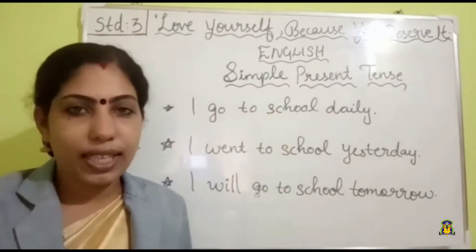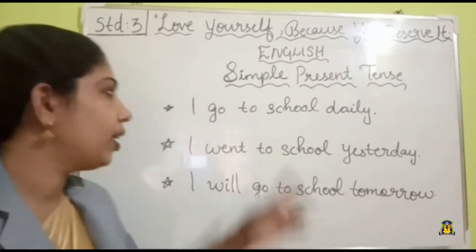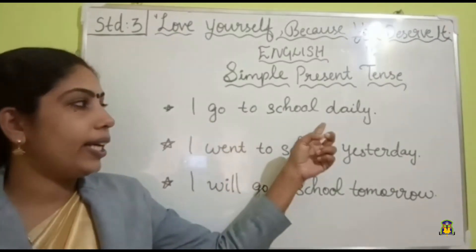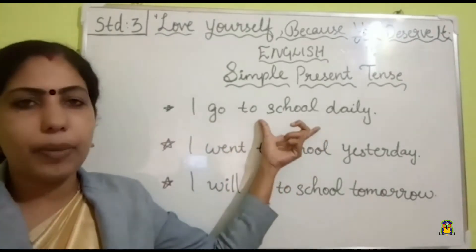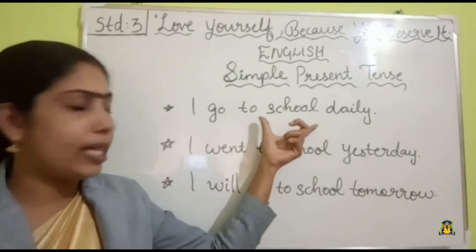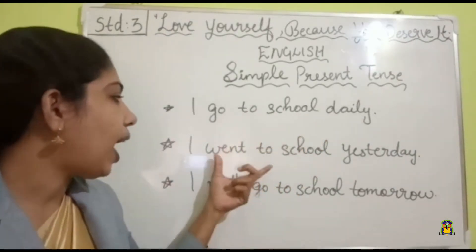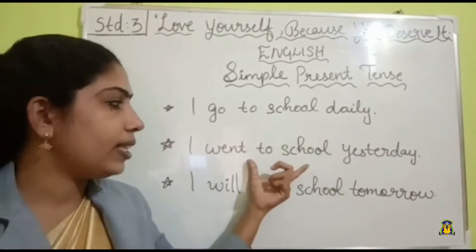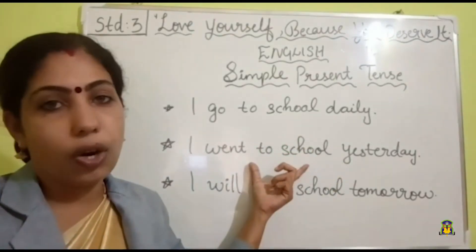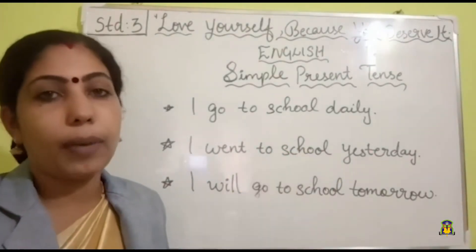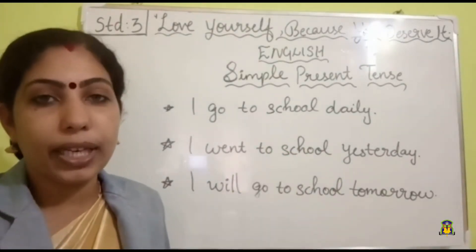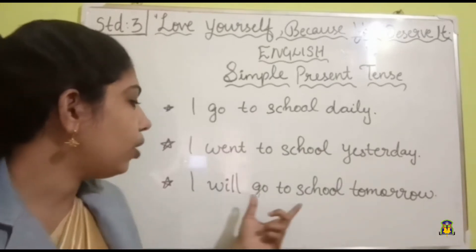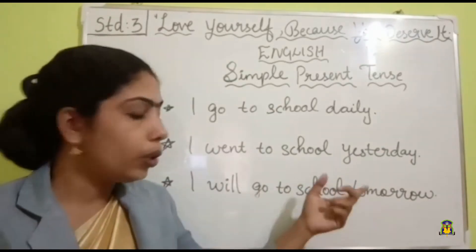Now see these sentences, children. 'I go to school daily.' This statement is in present tense. 'I went to school yesterday.' This sentence is talking about something that happened in the past. 'I will go to school tomorrow.'